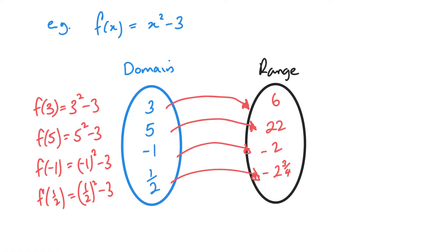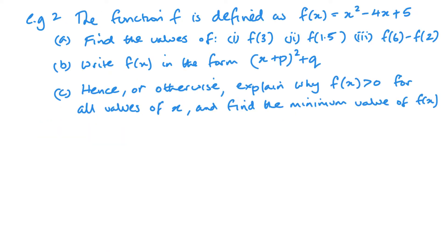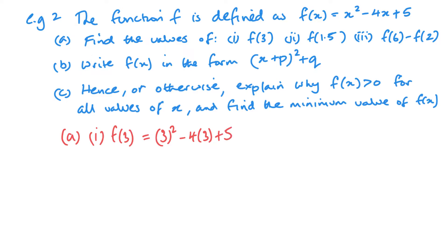Now let's look at the type of question you will see for these functions. We've got the function f defined as f of x equals x squared minus 4x plus 5. For part a, find the value of f of 3. So I'm just substituting 3 in: 3 squared minus 4 lots of 3 plus 5. So that's 9 minus 12 plus 5, which gives me 2. And that's how I find f of a value.